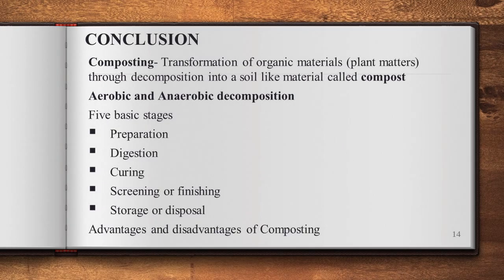So, we are concluding this section. We studied what is composting, its different stages, and its advantages and disadvantages. Composting is defined as the transformation of organic material through decomposition into a soil-like material called compost.